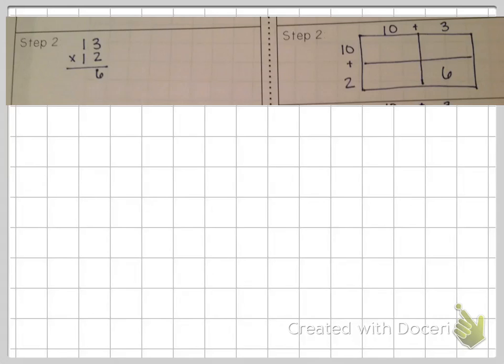The second step is to multiply ten times two, and ten times two is twenty. So over here in the box method, that would go in the box where ten and two meet. So we've done three times two, and we've done ten times two.